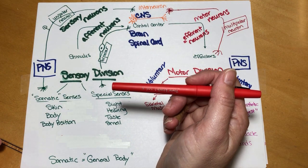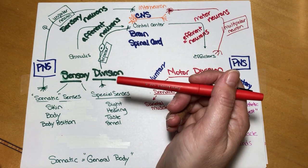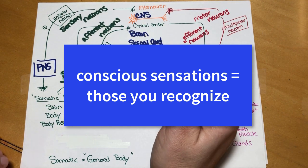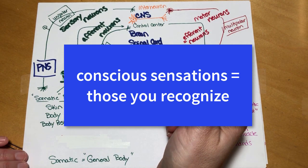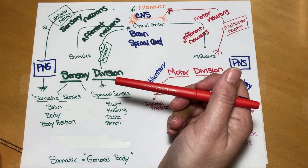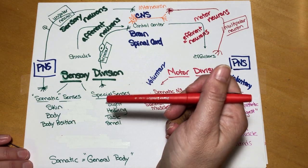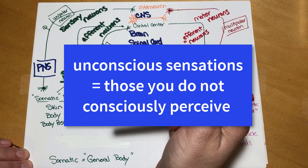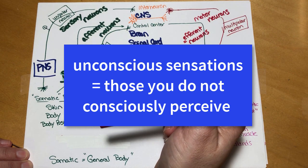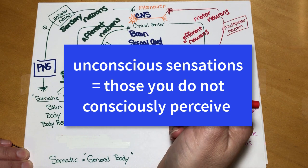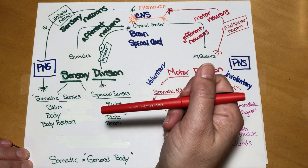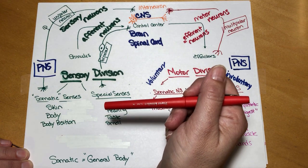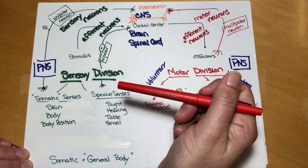Some of these sensations are going to be conscious sensations. For example, touch, pain, and sense of smell — those are all conscious sensations that you know about when you're experiencing them. We also have unconscious sensation. Unconscious sensations are things like your heart rate, your blood pressure, your glucose levels. Those are all constantly monitored but you're not really thinking about them — you're not conscious of that sensation.